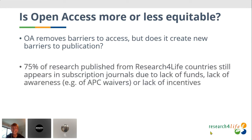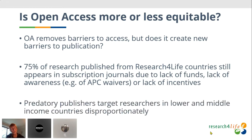Recent studies, including our deep dive into Dimensions, showed that 75% of research published from Research for Life countries still appears in subscription journals — due to lack of funds, lack of awareness that APC waivers are available, or lack of institutional incentives to publish in open access titles. We also know that predatory publishers target researchers in lower and middle income countries disproportionately.